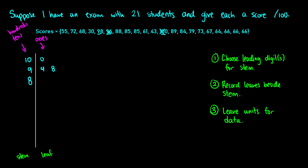Now I can do the 80s and continue. Usually in a stem and leaf plot you order them from smallest to largest. I see an 84, so I put a 4 here. I see an 85, so I put a 5 here. I see another 85 — so now I have two 85s, I just repeat the digit again. So that's 84, 85, and 85. I see an 88, so I put an 8 to the right. And I have an 89, so I put a 9 to the right. I have five scores in the 80s: 84, 85, 85, 88, and 89.